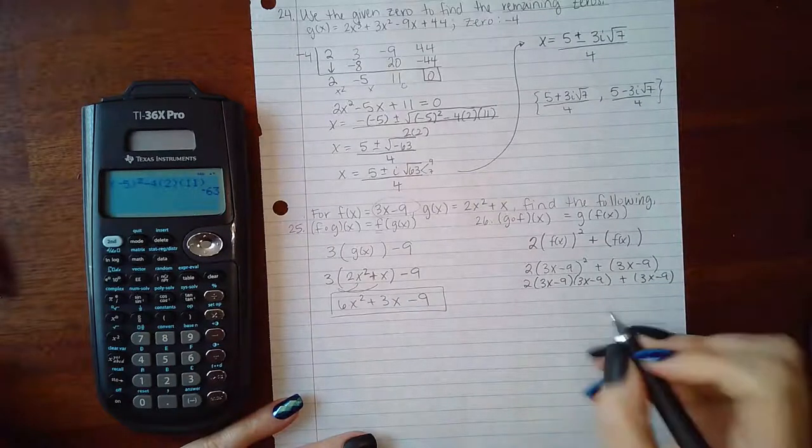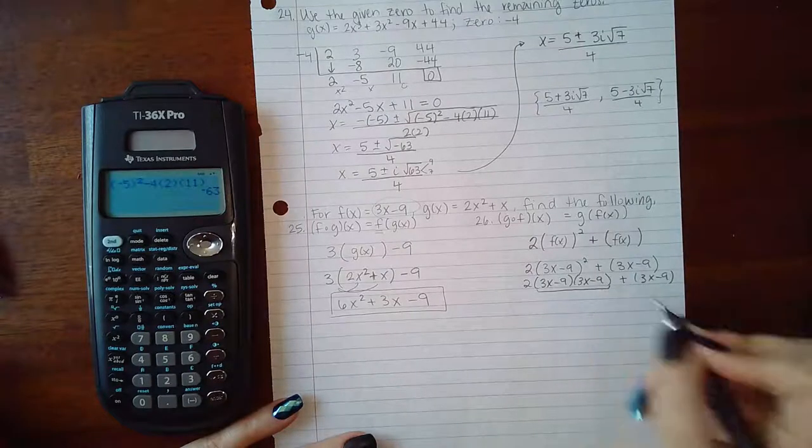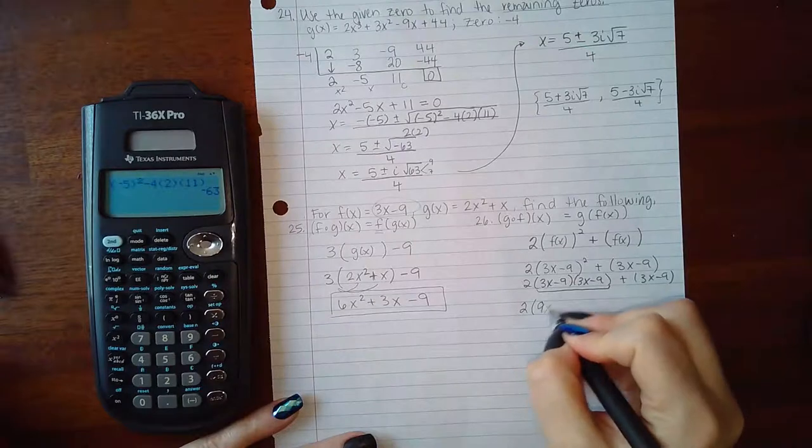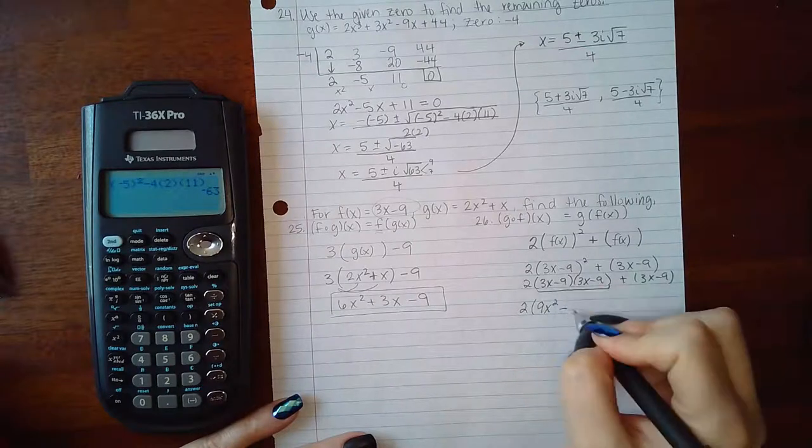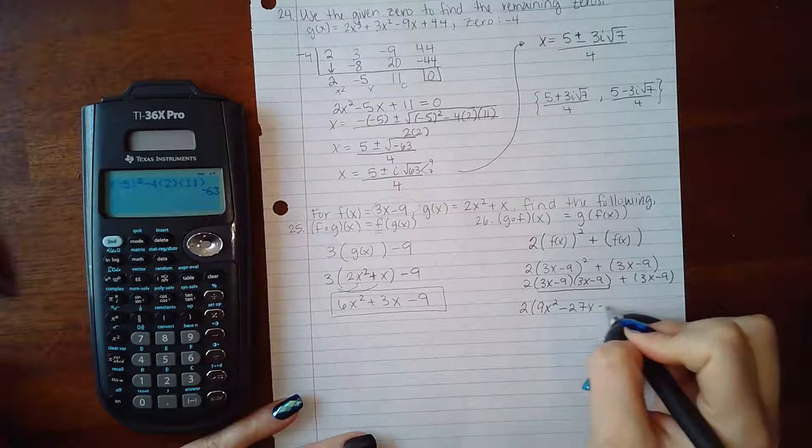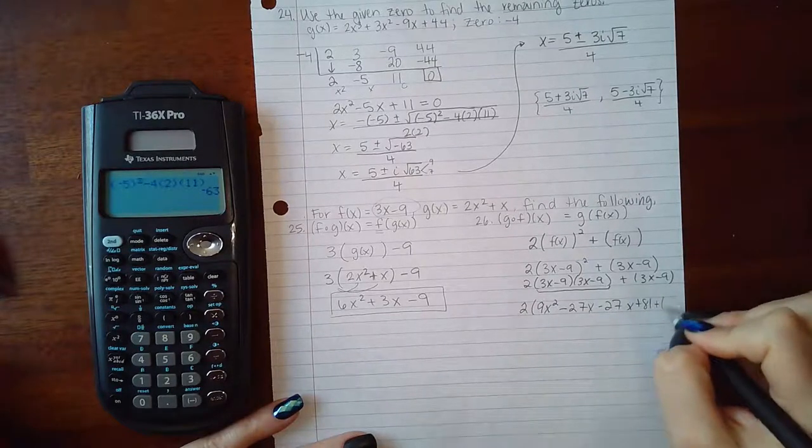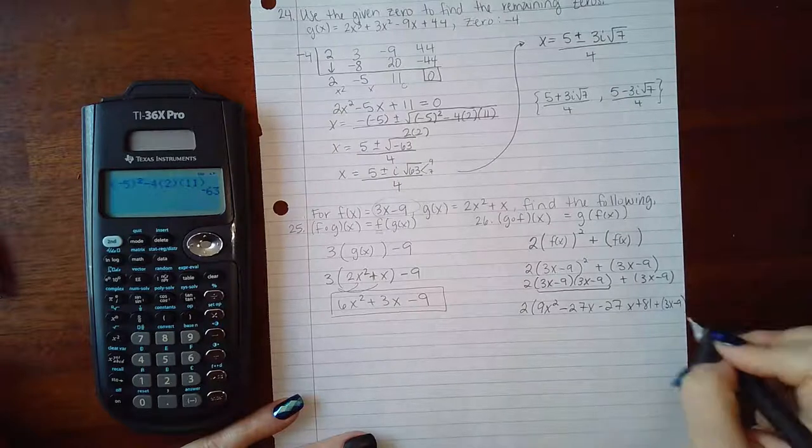So I'm going to work from the back. I'm going to multiply these two and then I'll distribute the 2 later. So we get 9x squared minus 27x minus 27x plus 81 plus 3x minus 9 over here on the other side.